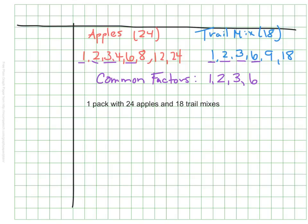If she needed enough for a third friend, she could make three packs, and each pack would have eight apples and six trail mixes. And lastly, her greatest option to bring the most people and provide snacks for the most amount of friends would be to have six packs with four apples and three trail mixes each.